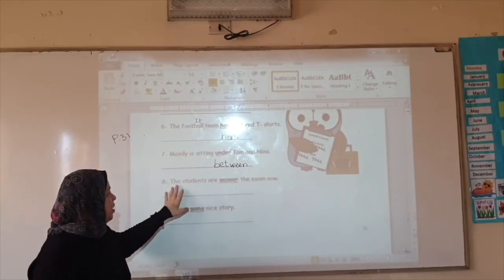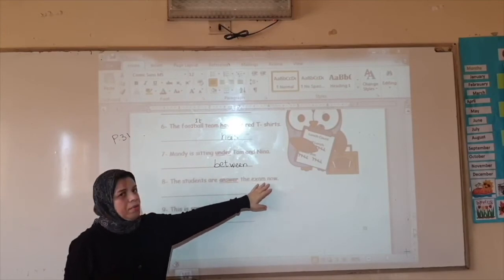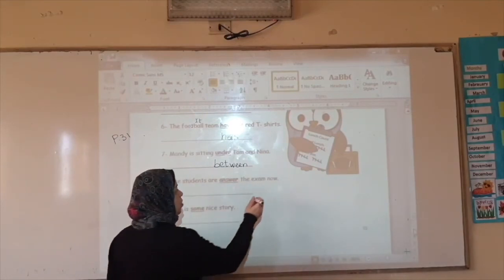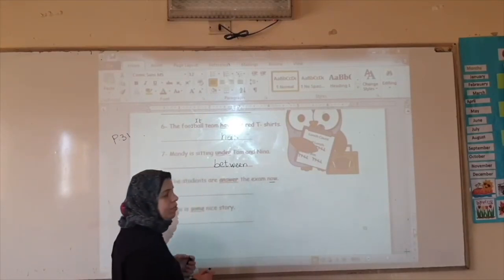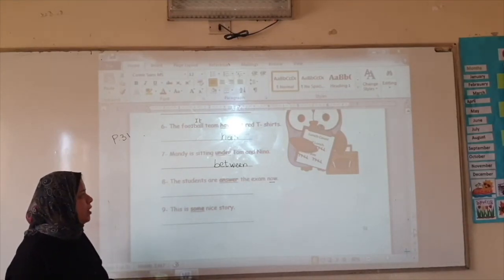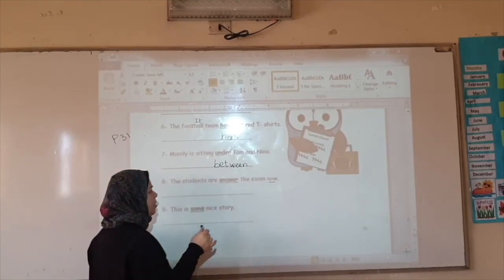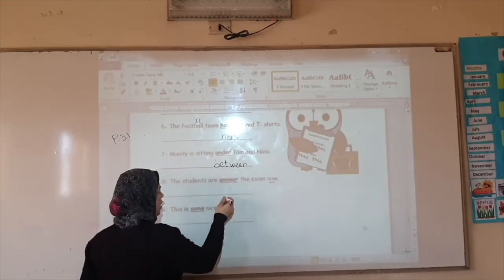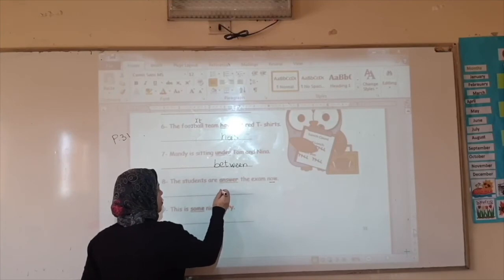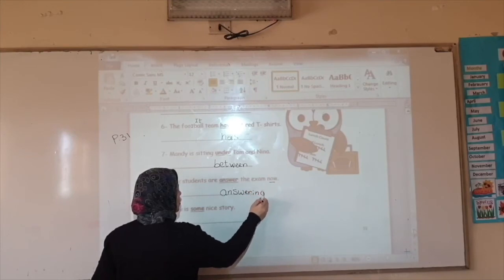Number eight. The students are answering the exam now. Now. So when I have now, it means that this is present continuous. Remember, it's the way of the butterfly. Okay, the butterfly is sad. That is what I am reading. So I'm going to say, and. Ring. The second ring.